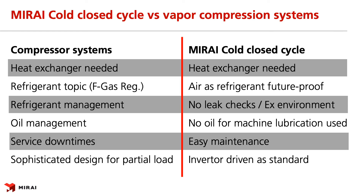Here are some basic examples comparing vapor compression systems with Mirai Cold closed cycle. With compressor systems: a heat exchanger is needed, there is an uncertain future for refrigerants related to F-gas topics, refrigerant management and oil management is necessary, sometimes costly service downtimes can occur due to the complicated design, and sophisticated design is usually needed for partial load operation. With Mirai Cold closed cycle: a heat exchanger is also needed, but air as refrigerant is future proof, there is no need for leak checks or explosive environment measures, no oil is used for machine lubrication, Mirai Cold is very easy to maintain, and it comes standard with an inverter drive.